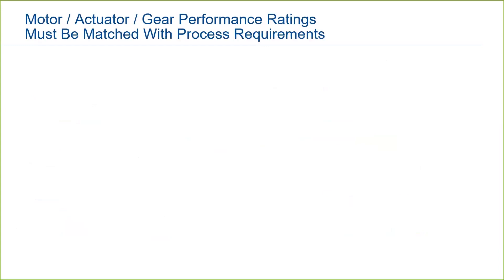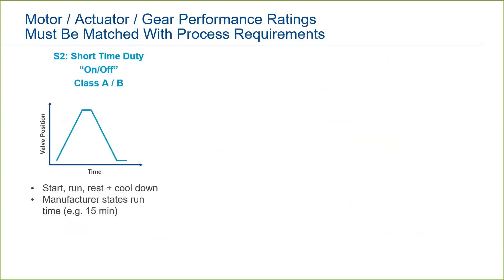There are three basic types of motor and actuator ratings, dictated by the performance of the motor, actuator, and any external gears. The first is S2 short-time duty. This may also be called on-off duty, or class A or class B, depending on where you are in the world. All these terms mean basically the same thing, which is a situation where the motor starts, runs, stops, and cools down.